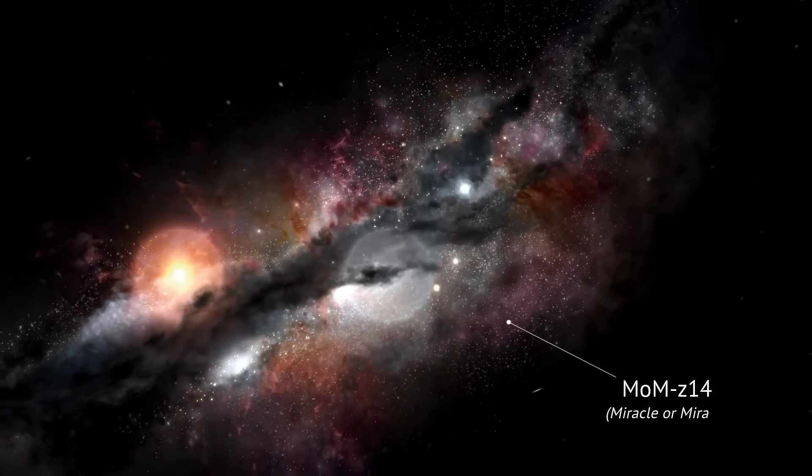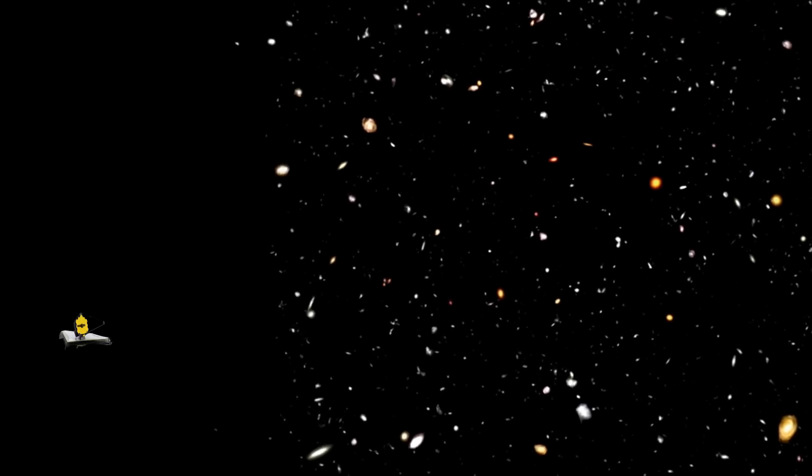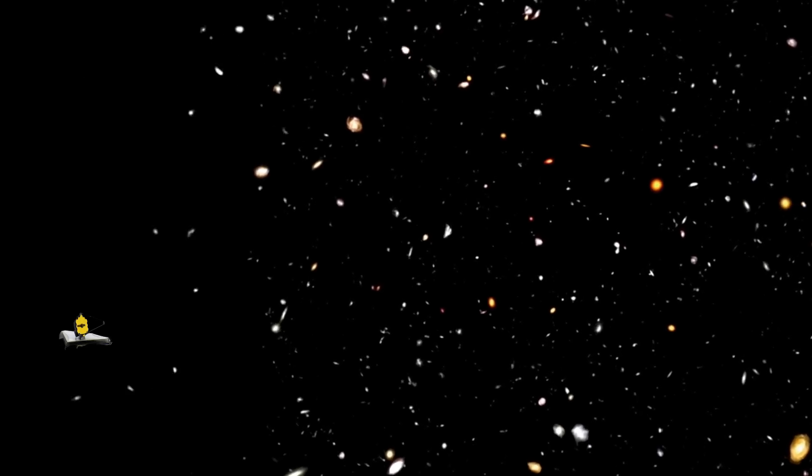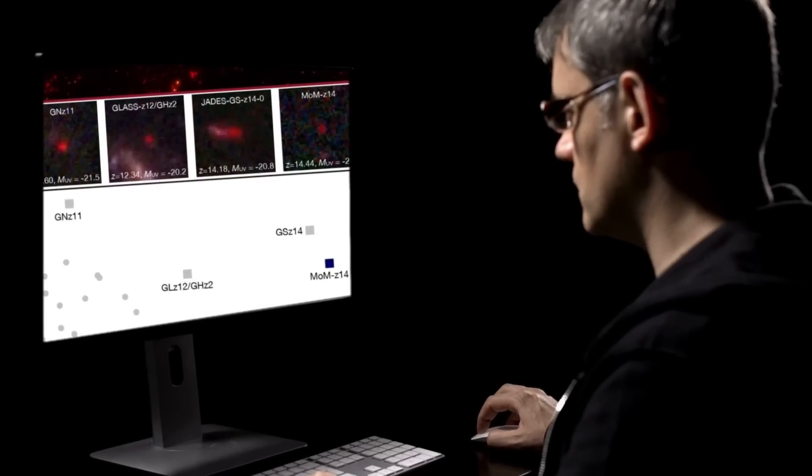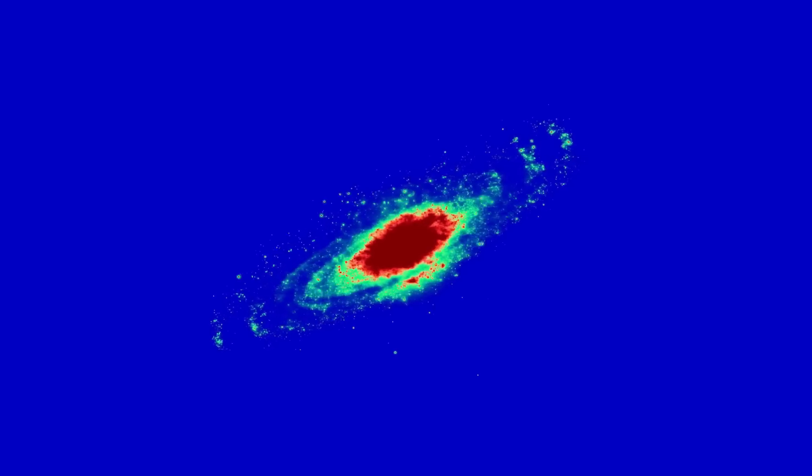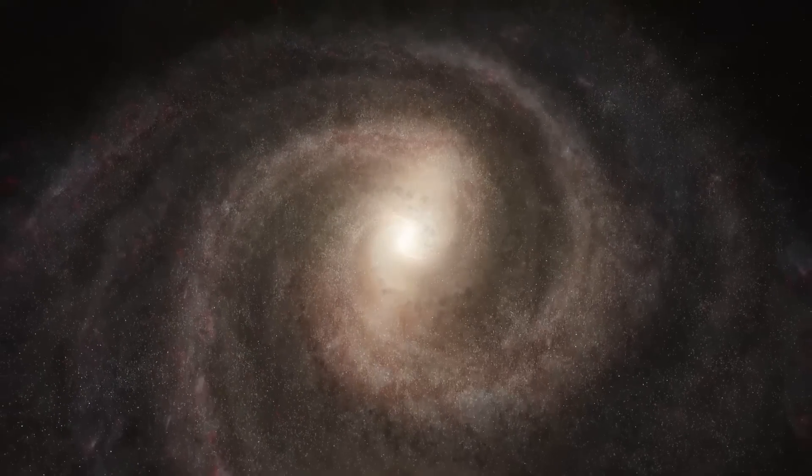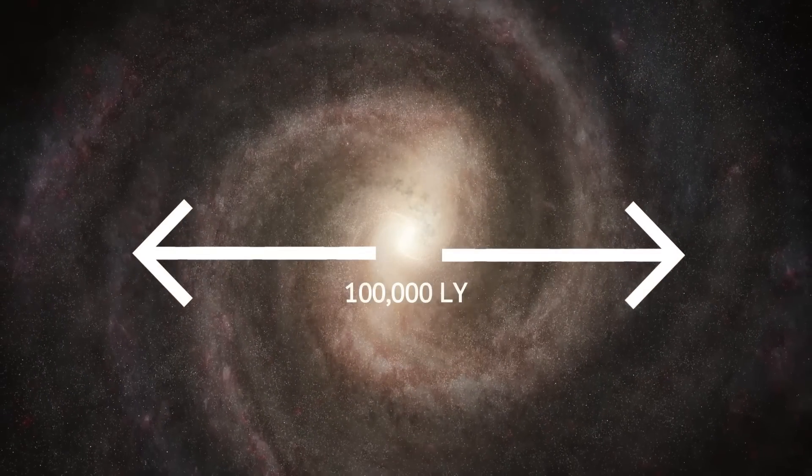Then came MACS0647-JD. With a redshift of 14.44, it pushed our view even deeper into time. And it wasn't just the redshift that stunned scientists, it was what the galaxy actually looked like. This galaxy is tiny, about 500 light-years wide. For comparison, our Milky Way spans over 100,000 light-years.